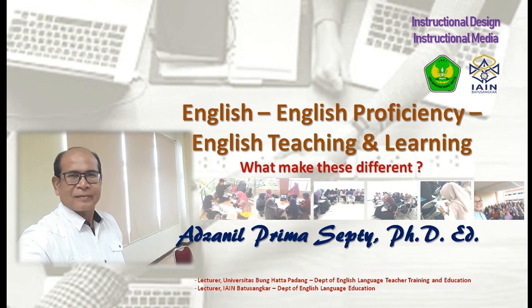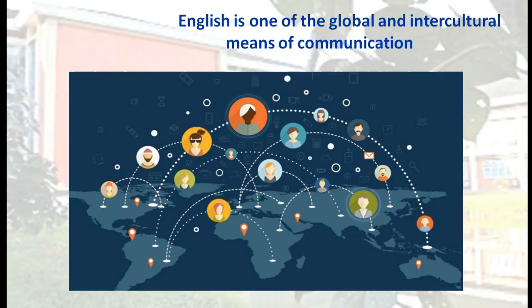What makes these different? Some of us might be confused about this. As we know, English is one of the global languages in the world — not only English, but also other languages like Indonesian, Japanese, German, Arabic, and so on. There are so many languages in the world, and one of them is English, which is one of the international languages and intercultural means of communication.